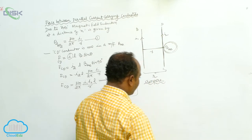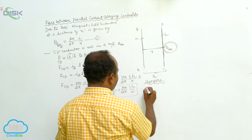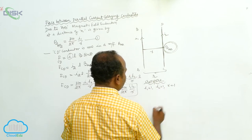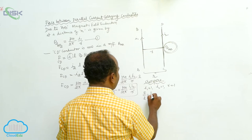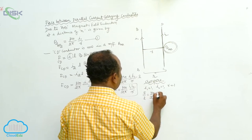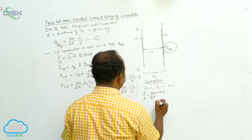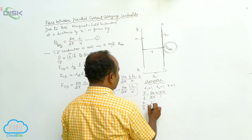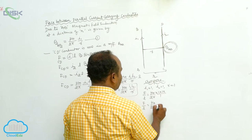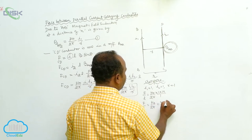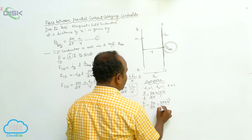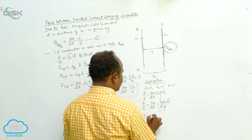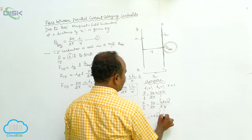What is Ampere? When I1 = 1, I2 = 1, and R = 1, then F/L = μ₀/2π × 1 × 1/1 = 4π×10⁻⁷ / 2π = 2×10⁻⁷ newton per meter.